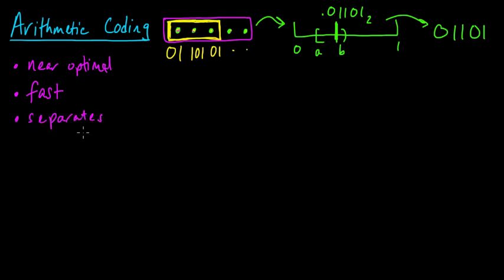Separates modeling from coding. This is a very nice feature to have. All right, so those are some nice features of arithmetic coding, and next we'll work through a couple concrete examples to see how it works.